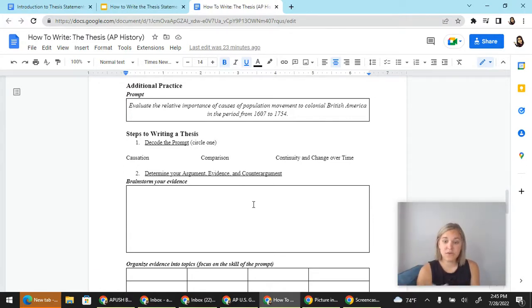You could if you are an AP world teacher, AP European teacher, you could adjust it to not be the British America. You could adjust it to French American colonies, Dutch American colonies, Spanish American colonies. You can make an adjustment based on where and when you're teaching this in your curriculum.